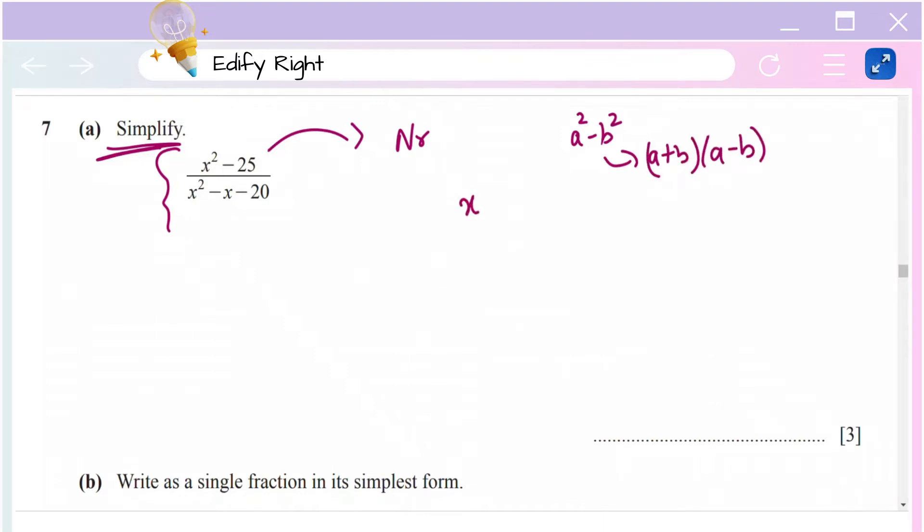Here we have x² - 25, which I can write as x² - 5². So I can split x² - 5² as (x + 5)(x - 5). That's the numerator part.